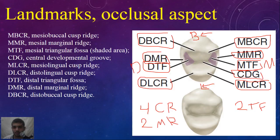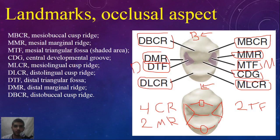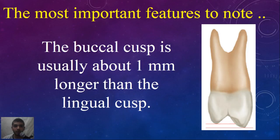As you can see on this picture without any landmarks: this is the buccal cusp, this is the lingual cusp, this is the mesial buccal cusp ridge, the distal buccal cusp ridge, the mesial lingual cusp ridge, and the distal lingual cusp ridge. This is the mesial marginal ridge and the distal marginal ridge. This is the central groove, the mesial triangular fossa, and the distal triangular fossa. These are the landmarks from an occlusal aspect.